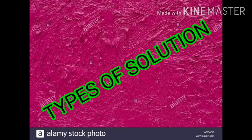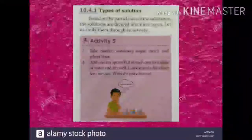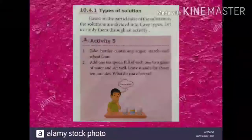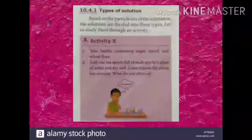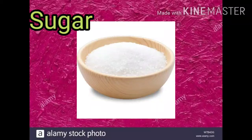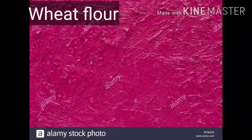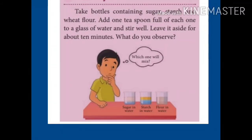We move on to types of solution. Based on the particle size of the substance, solutions are divided into three types. Let us study them through an activity. Take bottles containing sugar, starch, and wheat flour. Add one teaspoon of each one to a glass of water and stir well — three glass tumblers. Leave it aside for about 10 minutes.